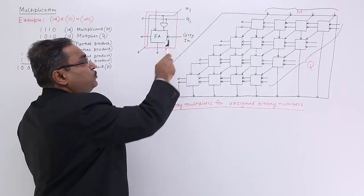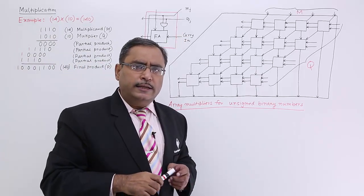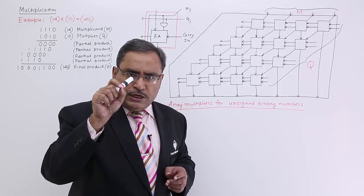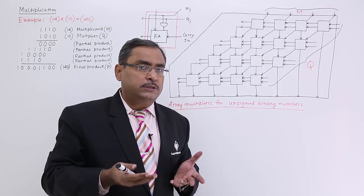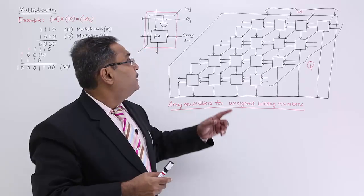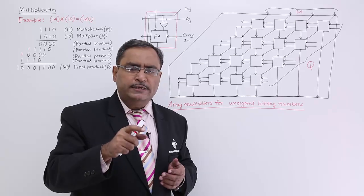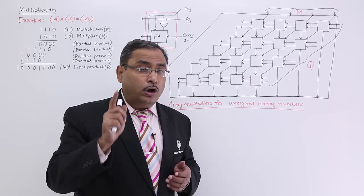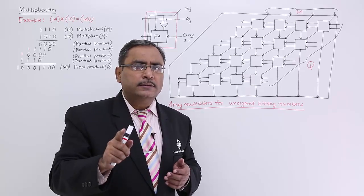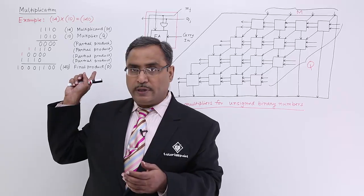So now it is qj. What is qj? That is the jth bit of the q register. The q register contains the multiplier. What is mj? mj is nothing but the jth bit of the m register. What does m contain? m contains the multiplicand. I told you this earlier.